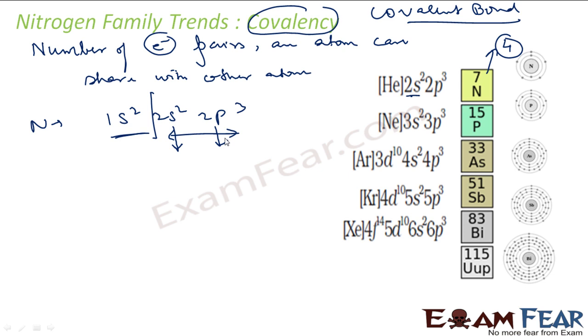So nitrogen can at the max go for covalency of 3. See, if you talk about s, it is like this: 2s, 2px1, 2py1, 2pz1. Think from this perspective. Now 1, 2, 3, 4. Four at the max allowed for bonding.